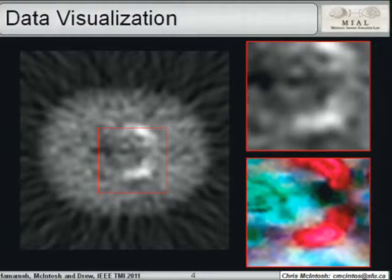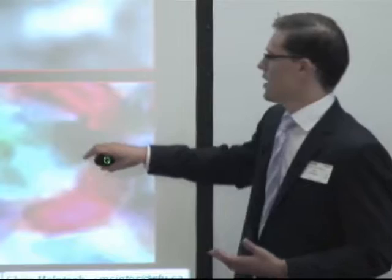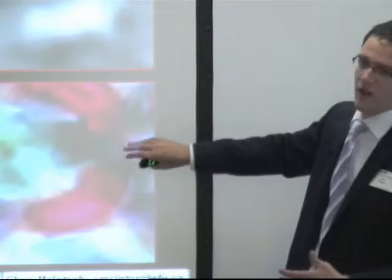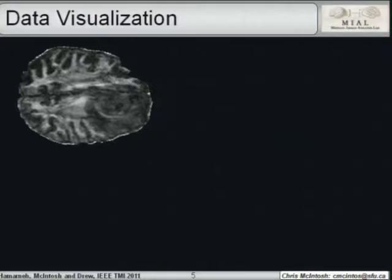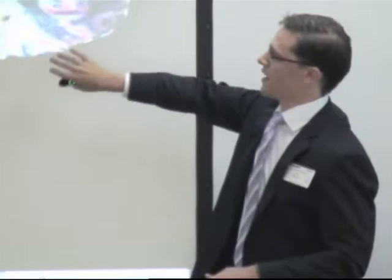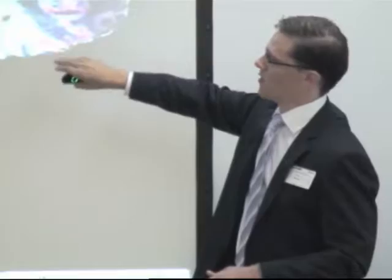What we published in TMI this year is a method to visualize the data while respecting the underlying variability. We map the space of possible functions to a human-uniform perceptual space — Lab color space — so that colors that look very different to a human correspond to very different functions in the high-dimensional space. This presents much more information very quickly to a clinician.